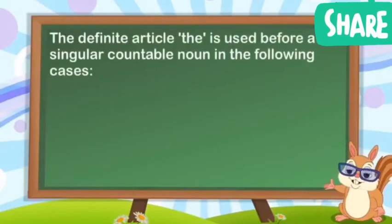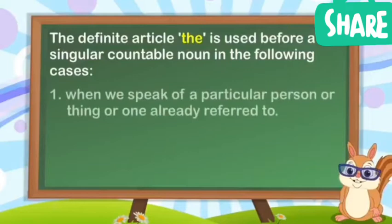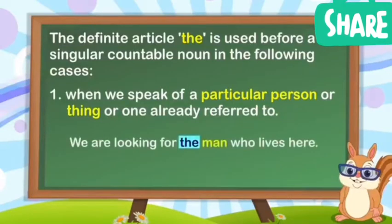The definite article THE is used before a singular countable noun in the following cases: when we speak of a particular person or thing or one already referred to. For example, we are looking for the man who lives here.